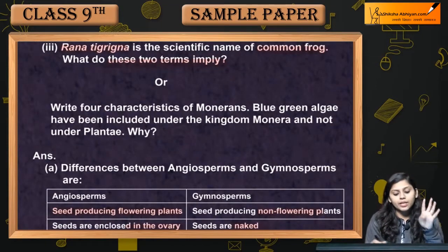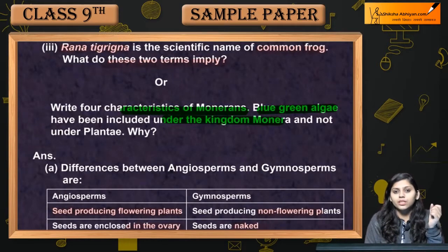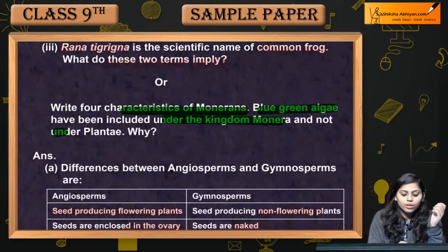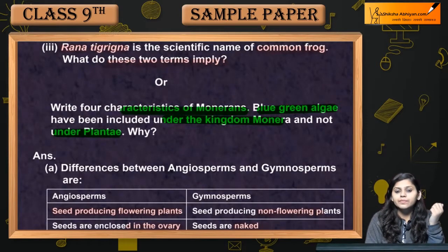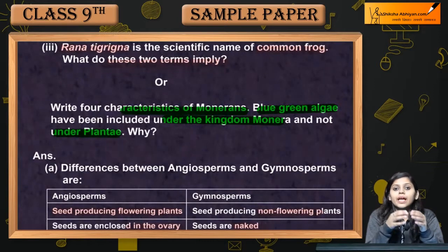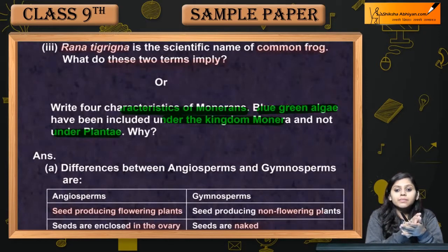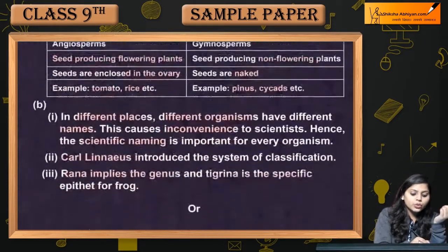Write four characteristics of Monerans. Blue-green algae have been included under the kingdom Monerans and not under the plant kingdom. Why? These are the four characteristic features of Monerans, and blue-green algae have been placed in the kingdom Monerans.